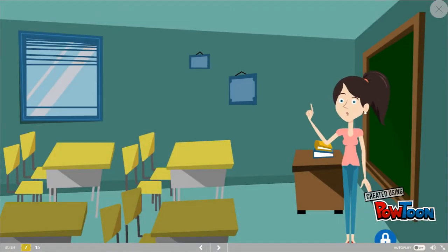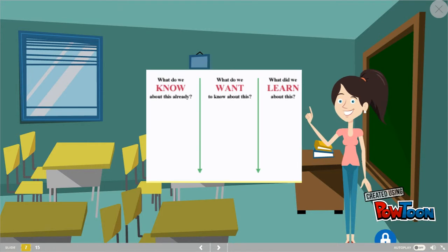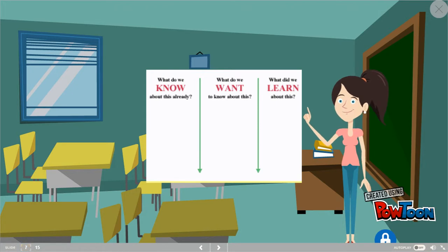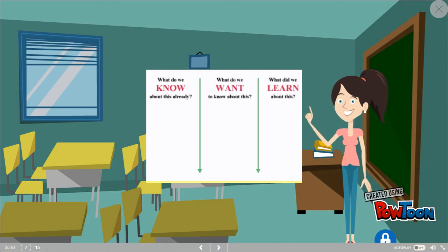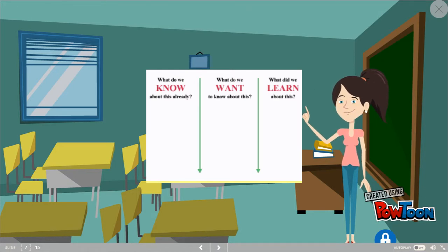Just after I introduce the topic, there is a little activity before we start. In groups or individually, I would ask the students to write down in the first two columns what they already know about this topic, and what they want to know about it. Then we would go back to the third column when we finish and write down what we learned about the topic. It's just a little poll so students know what we need to aim for.